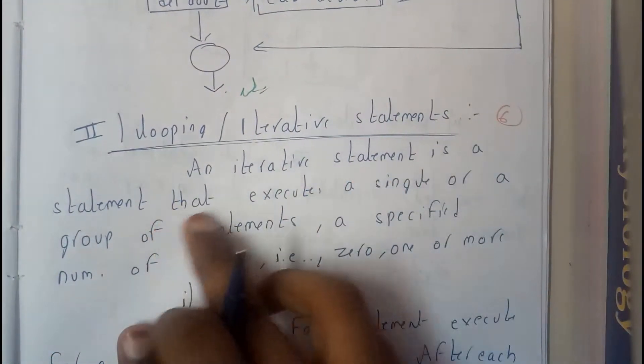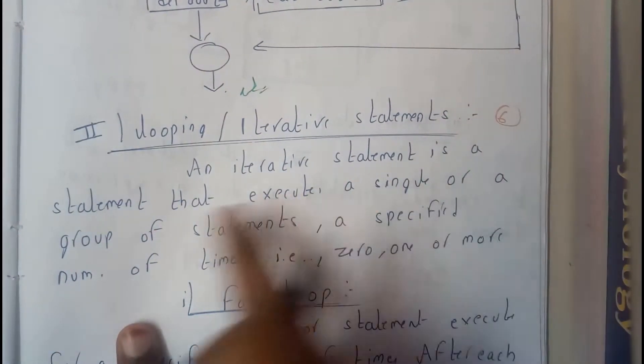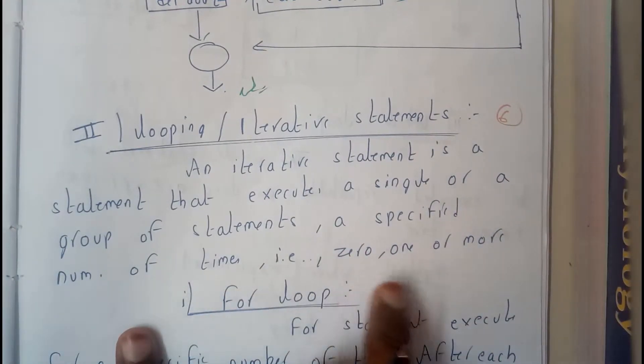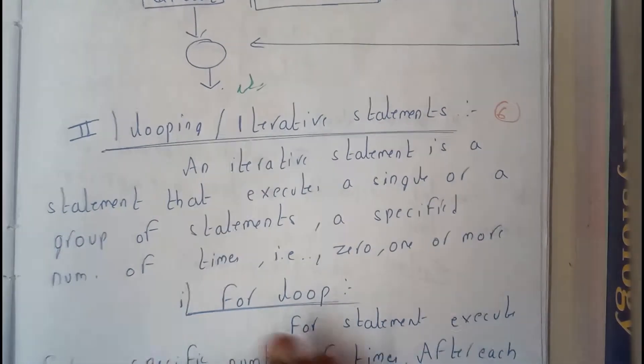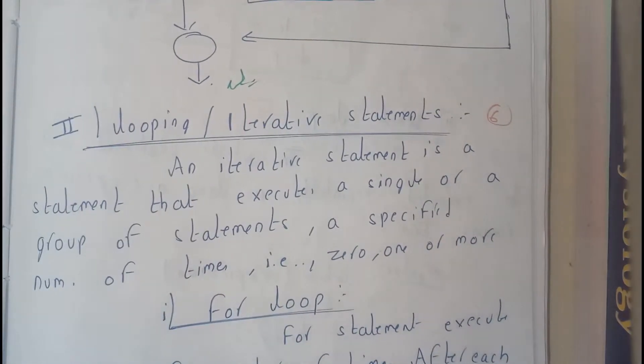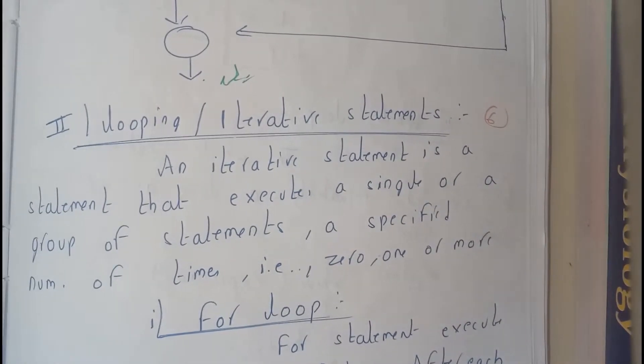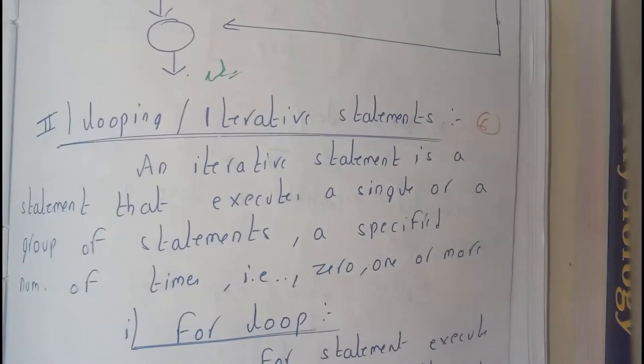is a statement that executes a single or a group of statements a specified number of times, zero, one, or more. So this is something like a loop - it's going to execute again and again until the requirements are met or specified. Okay, so in this tutorial let us go through...